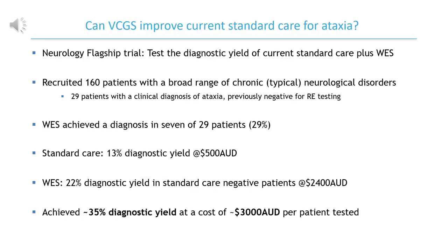Whole exome sequencing as a government Medicare-funded test is currently being implemented in Australia. Therefore, we trialled the likely impact on diagnostic rates in individuals with a clinical diagnosis of ataxia. 29 individuals negative for diagnostic repeat expansion testing were analysed by whole exome sequencing as part of the neurology flagship trial. A diagnosis was achieved in 7 patients, or 29% of individuals. We therefore predict that the maximum diagnostic yield for ataxia patients in Australia, utilising soon-to-be-implemented standard care, will be approximately 35%. Clearly there remains considerable room for improvement.